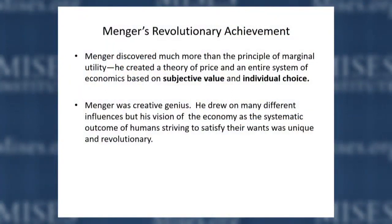Menger discovered much more than the principle of marginal utility — that wasn't even his main contribution. The main contribution was his focus on people striving to satisfy their wants, wants that were more or less important to them. His system of economics was an entire system based on people's subjective values and the choices they made. The central figure in the economy was the consumer striving systematically to satisfy wants, and the economy as a whole was an outcome of different people's judgments about their differing wants. He was a creative genius who really put it all together.